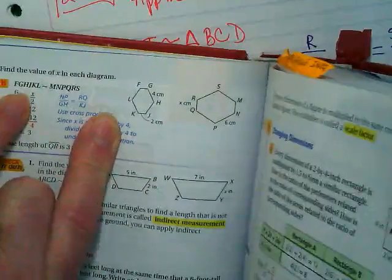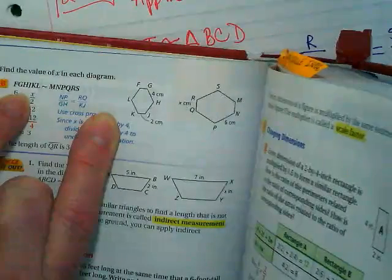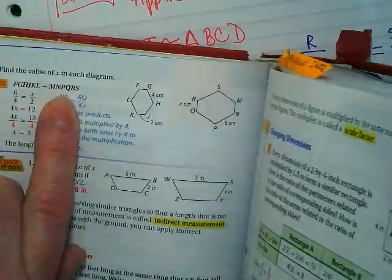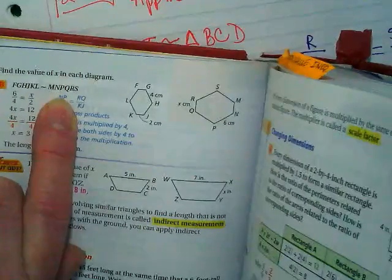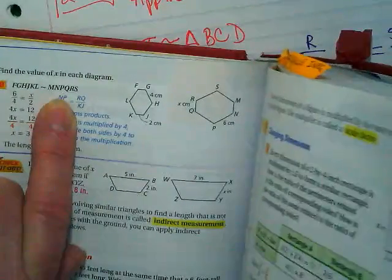Well, I look here, and G and H are the second and third letters. So it corresponds with the second and third letters, which are N and P. What's between N and P? Six centimeters.